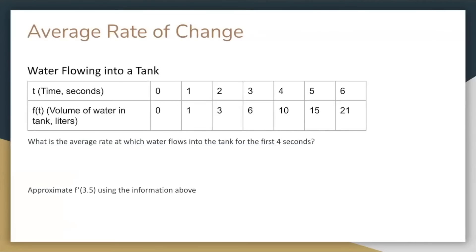So we begin with average rate of change. Here's an example where you're given the table of the volume of water in a tank at certain times. What is the average rate at which water flows into the tank for the first four seconds? That's just the average rate of change from t equals 0 to t equals 4. Using the formula, you get an answer of 2.5 liters per second. Then the question asks you to approximate f prime of 3.5. The closest values to 3.5 in the table are 3 and 4. So we just compute the average rate of change from t equals 3 to t equals 4, which is 4 liters per second.